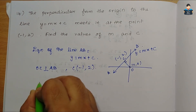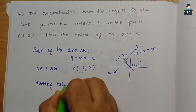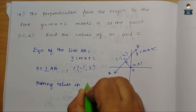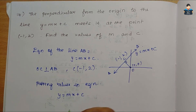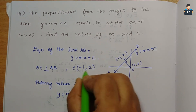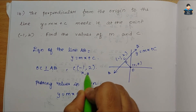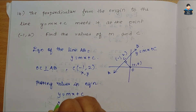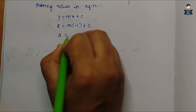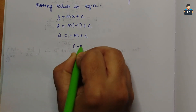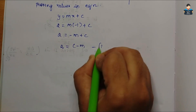Putting the values (-1, 2) into the equation y = mx + c: 2 = m(-1) + c, which gives us c - m = 2. This is Equation 1.